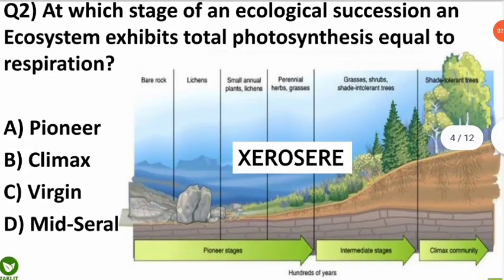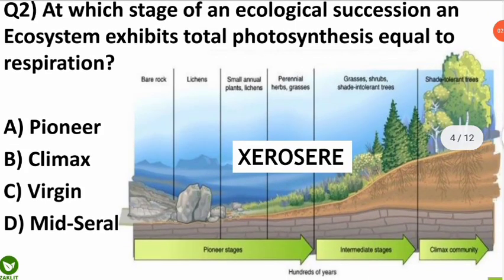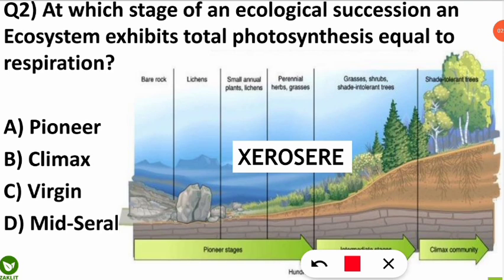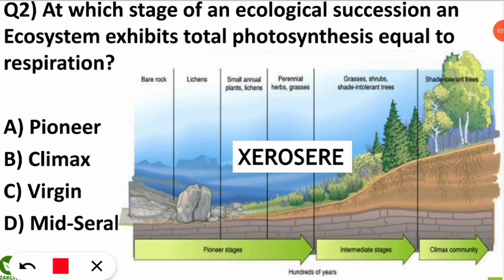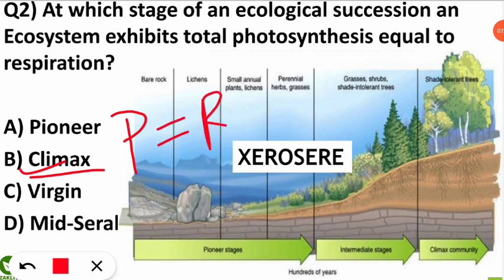The second question was from ecological succession: at which stage of ecological succession does an ecosystem exhibit total photosynthesis equal to total respiration? The correct option will be option B. In the climax stage of ecological succession, photosynthesis equals the respiration rate — P equals R.